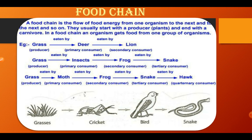In another food chain, grass is eaten by an insect, the insect is eaten by a frog, and the frog is eaten by a snake, making the snake the tertiary consumer. In yet another food chain, grass is eaten by a moth, the moth is eaten by a frog, the frog is eaten by a snake, and the snake is eaten by a hawk, which becomes the quaternary consumer.